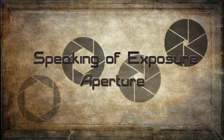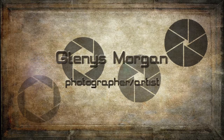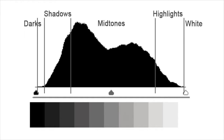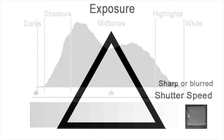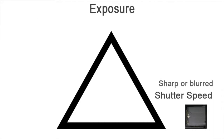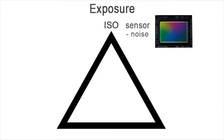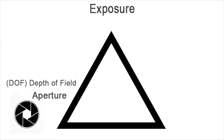Hi everyone, this is Glenys Morgan from shootpedals.com. Welcome to the third video in my exposure series. In videos 1 and 2 I gave you some insight into how to get better photos by understanding the exposure triangle. In video 1 you met the histogram and how it can help you get the best exposure for your image. Then in video 2 you learned about shutter speed and just a little bit about ISO. Today in video 3 you'll get comfortable with your camera's aperture — one more very important concept that once you understand it will change your photography forever.